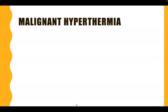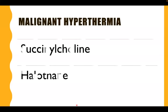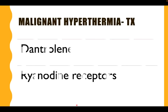In malignant hyperthermia, the two usual culprit drugs are succinylcholine and halothane. The drug of choice for malignant hyperthermia is dantrolene, and dantrolene specifically acts on the ryanodine receptors of the calcium channels.